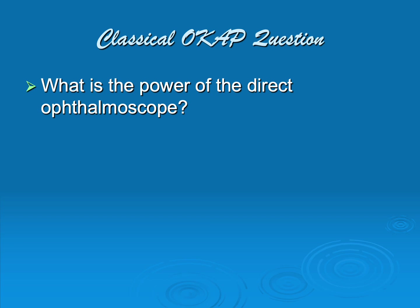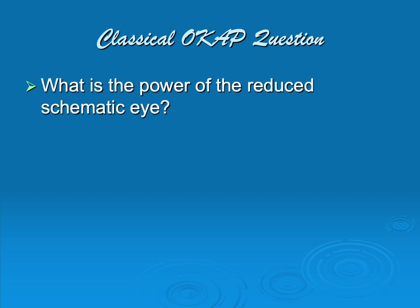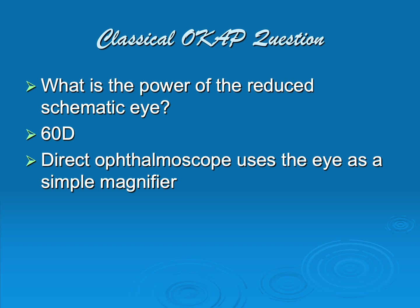Here is a classic OCAP question: what's the power of the direct ophthalmoscope? This is really asking whether you know the power of the reduced schematic eye. Dr. Alvar Goldstrand in the early 1900s determined that the power of the cornea plus the power of the lens generally equals 60 diopters. The direct ophthalmoscope itself doesn't give any power — it's the eye being examined that provides all the magnification. So we take 60 diopters divided by 4 to get simple or angular magnification: 15x. That is a classic OCAP question.